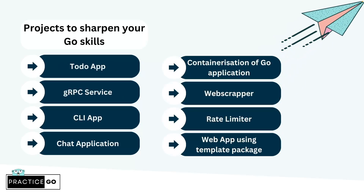For projects you can build in Go, here are a few to start with. First, a to-do app implementing a REST API using Golang with a SQL or NoSQL database, and using Golang's template engine for the front end. Then build a gRPC service, a CLI app, a chat application, containerize a Go application, build a web scraper using the net/http and goquery packages, create a rate limiter, or build a web app using the template package with HTML and text templates.